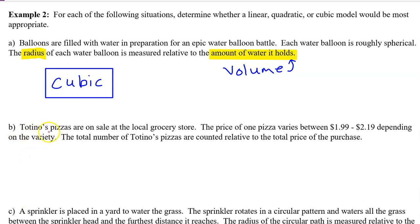Part B. Totino's pizza are on sale at a local grocery store. The price of one pizza varies between $1.99 and $2.19, depending on the variety. The total number of Totino's pizzas are counted relative to the total price of the purchase. In this context, the number of pizzas will be the input value. And the total price of the purchase will be the output value. We should use a linear model for this data, because the rate of change is going to be approximately constant. The price will increase by about $2 for every pizza.